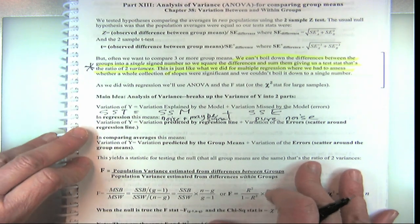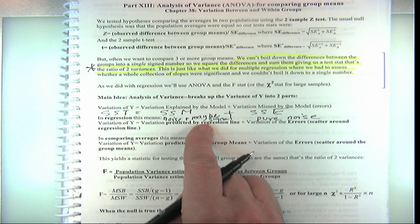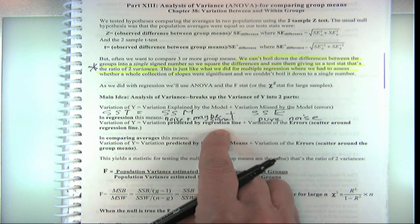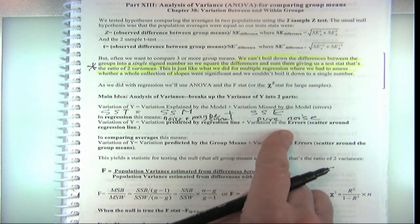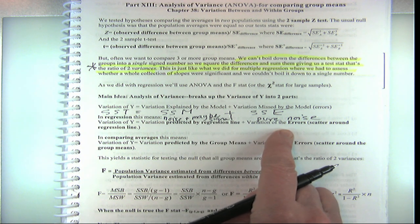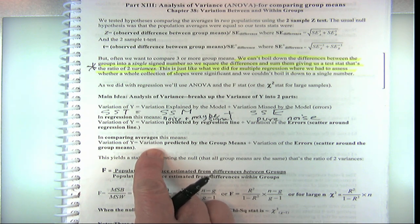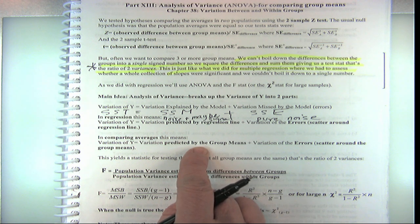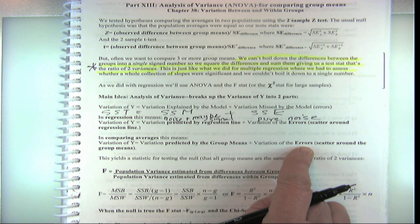You might be thinking: how are we making a prediction just from group means? When we have regression, we had a regression line, and the model was that line, with scatter around it as the error. But now, when we're comparing averages to see if there are differences between them, our model is the prediction based on each group's mean. If you're a freshman, my best guess for how you do on the exam is the mean of the freshmen. If you're a sophomore, I'd predict the mean of the sophomores. The variation is just the spread around those group means.